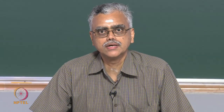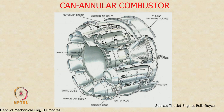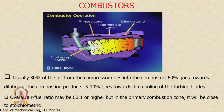In the last class, we looked at various types of combustors. Basically there are 3 types of combustors used in aircraft engineering applications: the can combustor, the annular combustor, and the can annular combustor. What we will do today is start with a discussion of the kind of processes that take place in a single can, looking at the thermodynamic processes inside such a can.